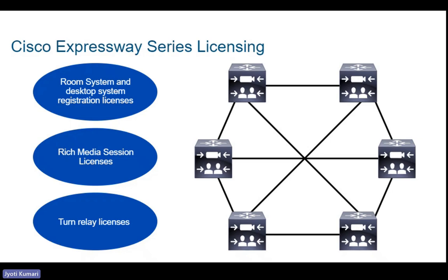The supported licenses include room system, desktop system, and registration licensing, as well as RMS license and TURN relay license. The room system and desktop licenses are required for all devices registered to Expressway-C. Devices that consume a registration license will not consume an RMS license when they are in a call with other Cisco registered endpoints or Cisco infrastructure products, for example, Meeting Server or calls in Collaboration Cloud. RMS is required only for business-to-business calls — that is, concurrent calls to any endpoint or application not registered to call control such as CUCM or Expressway within your enterprise, for example calls from business-to-business, Jabber guests, or calls to third-party systems like Skype for Business servers.